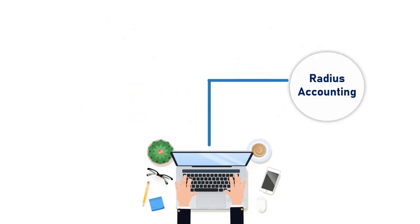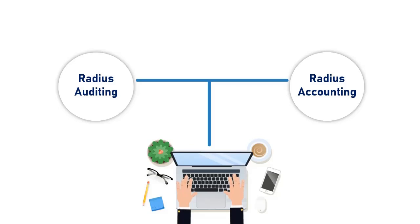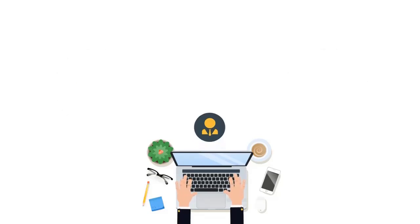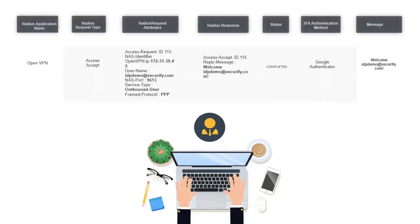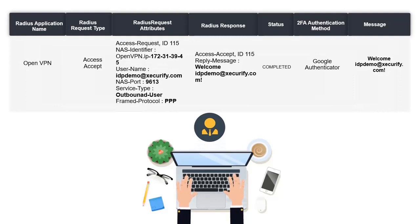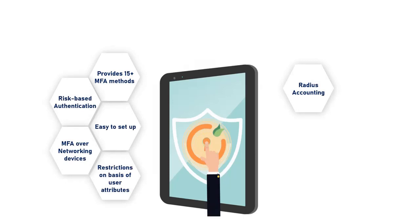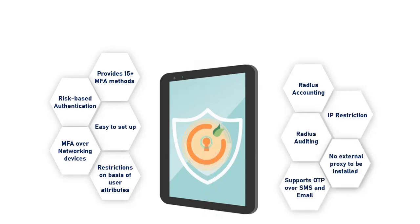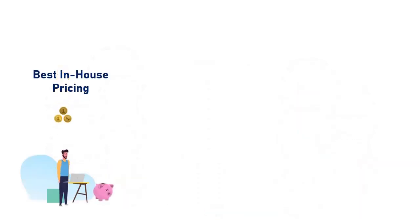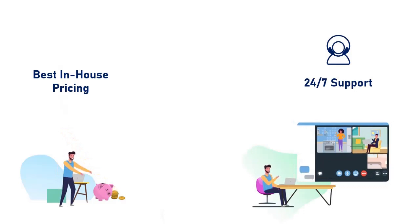Additional features like Radius accounting and Radius auditing are also included in the Mini Orange feature stack. This allows the administrator to keep track of OpenVPN usage and all login events. Along with all these additional features, we at Mini Orange make sure that you get all of this with the best in-house price and 24/7 real-time support.